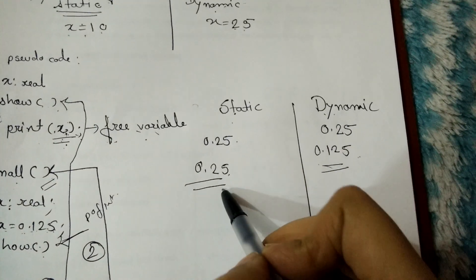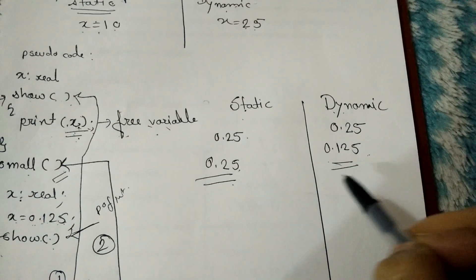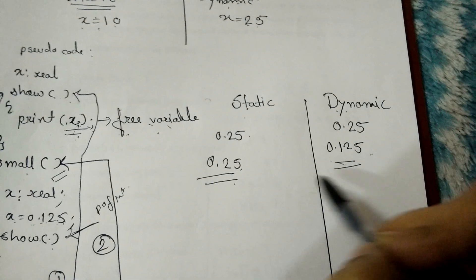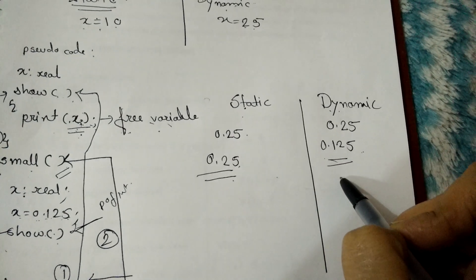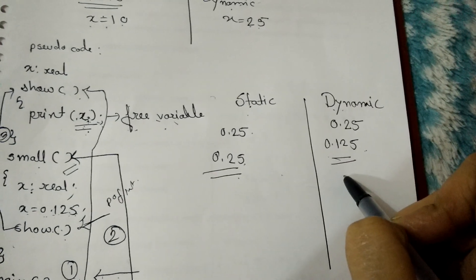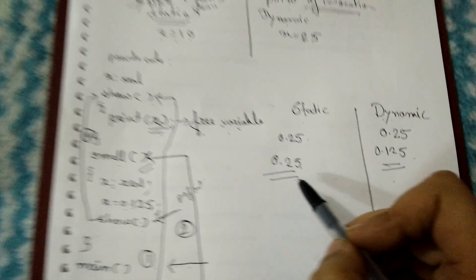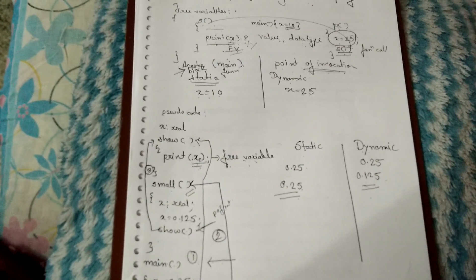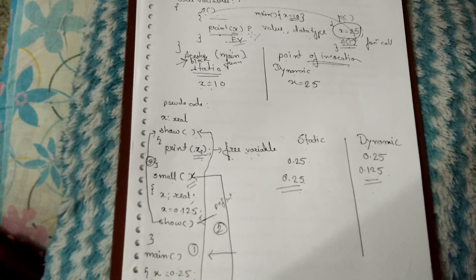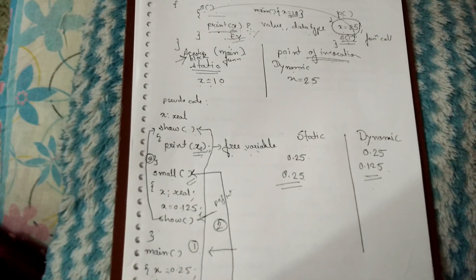That is the basic difference between static scoping and dynamic scoping. Hope you have understood the concept of static and dynamic scoping. Thank you.